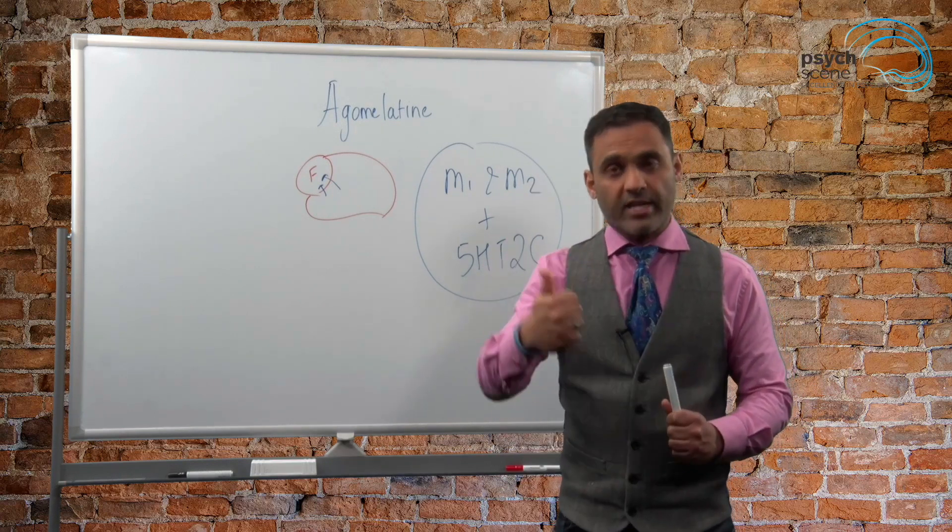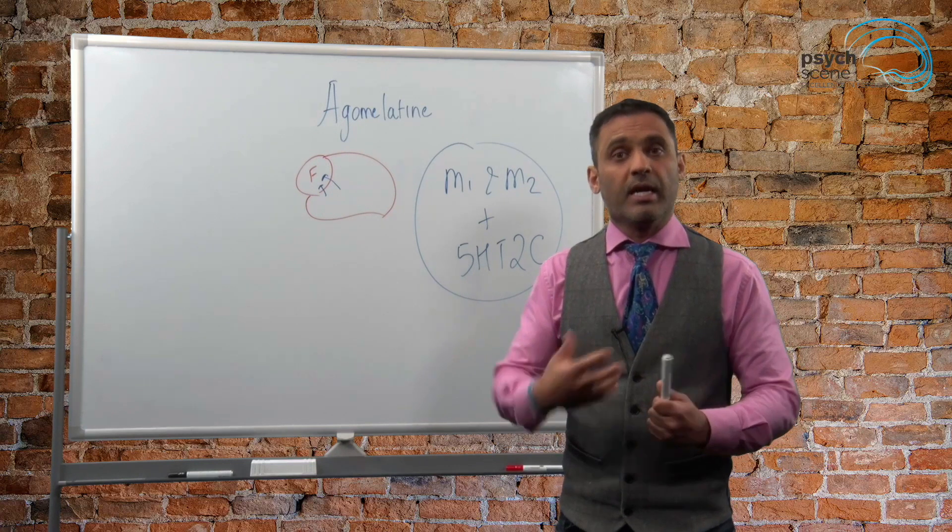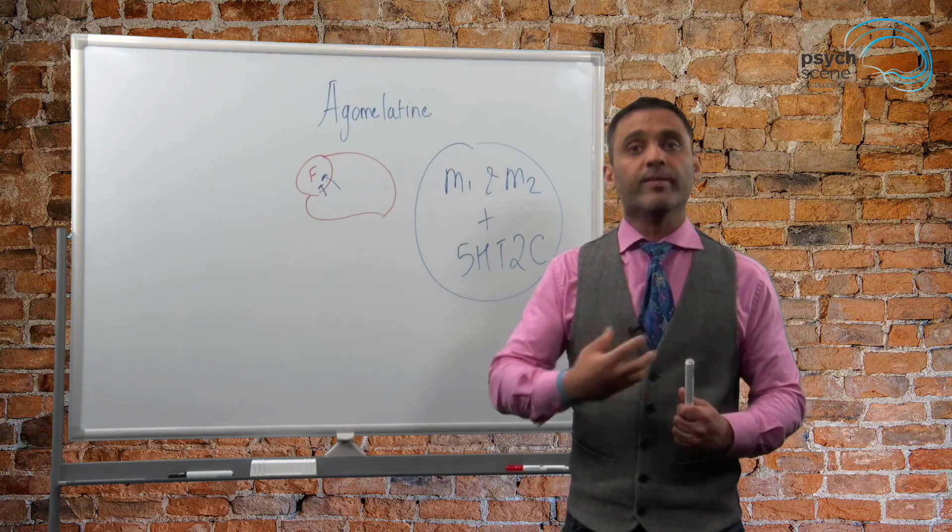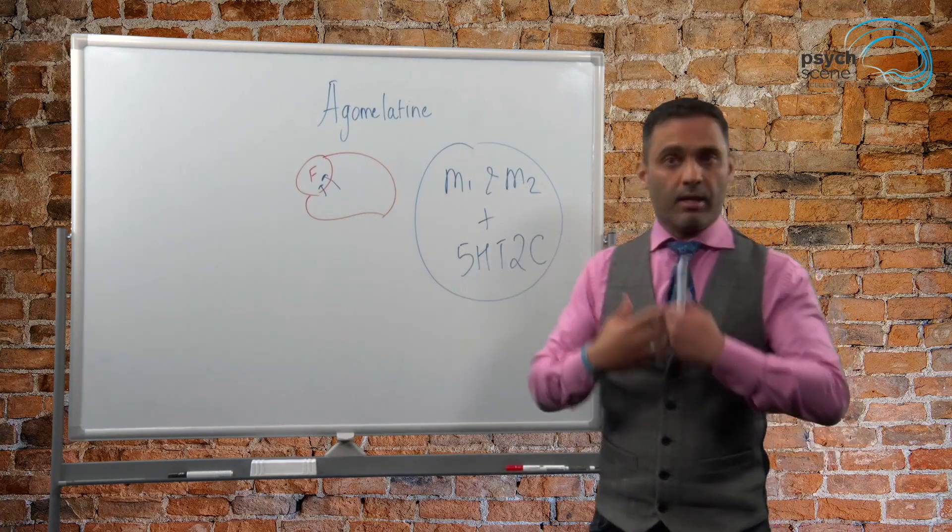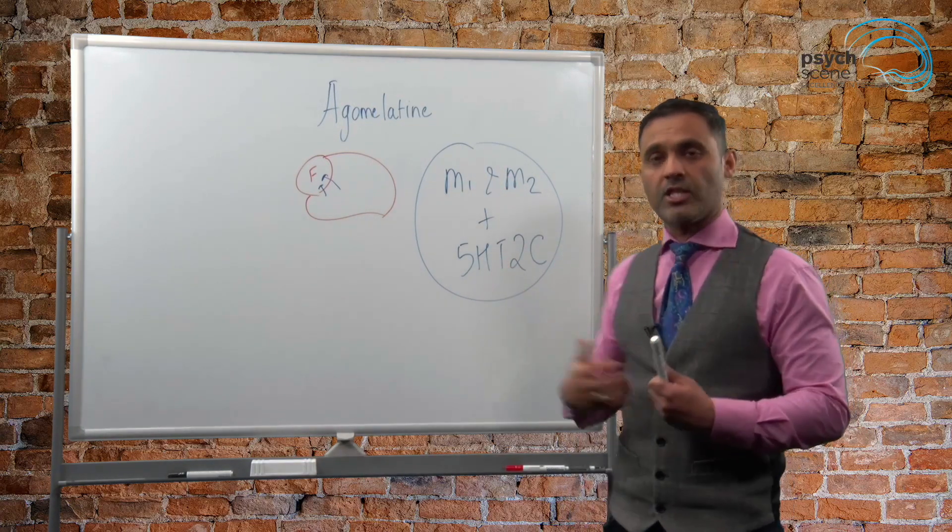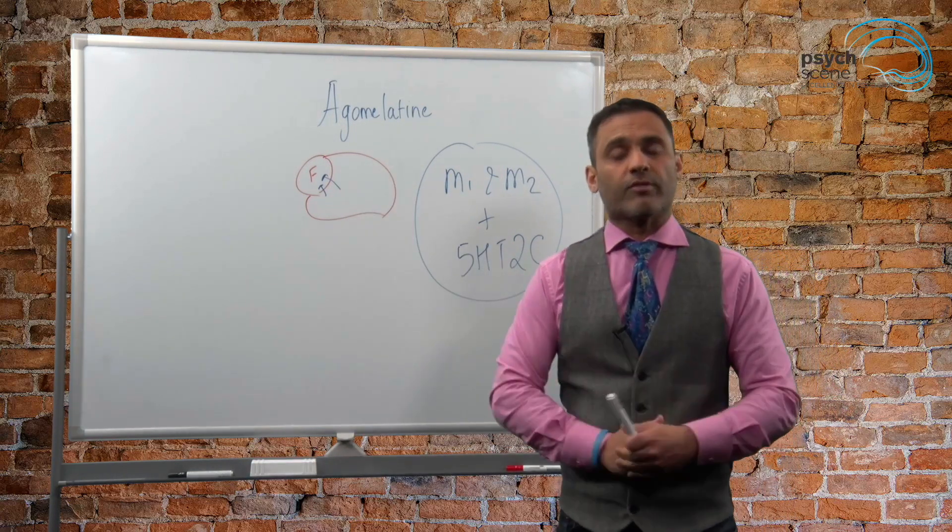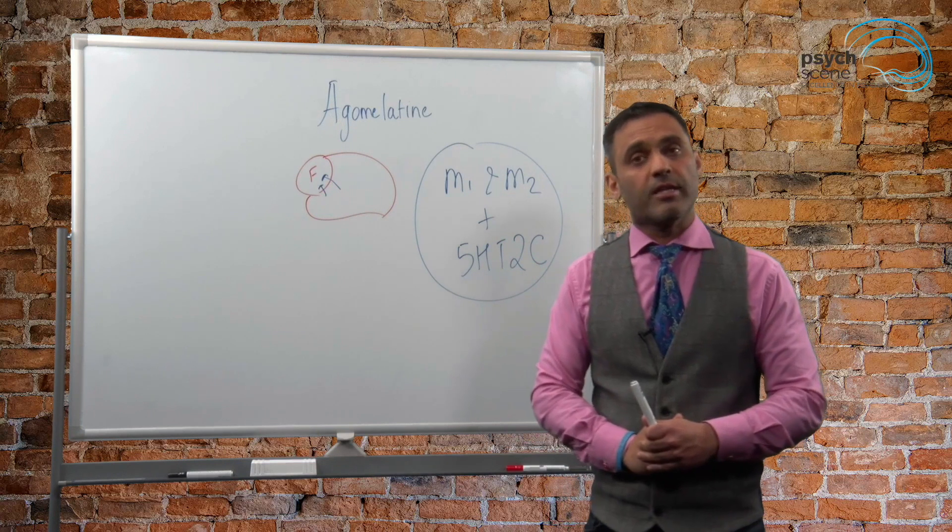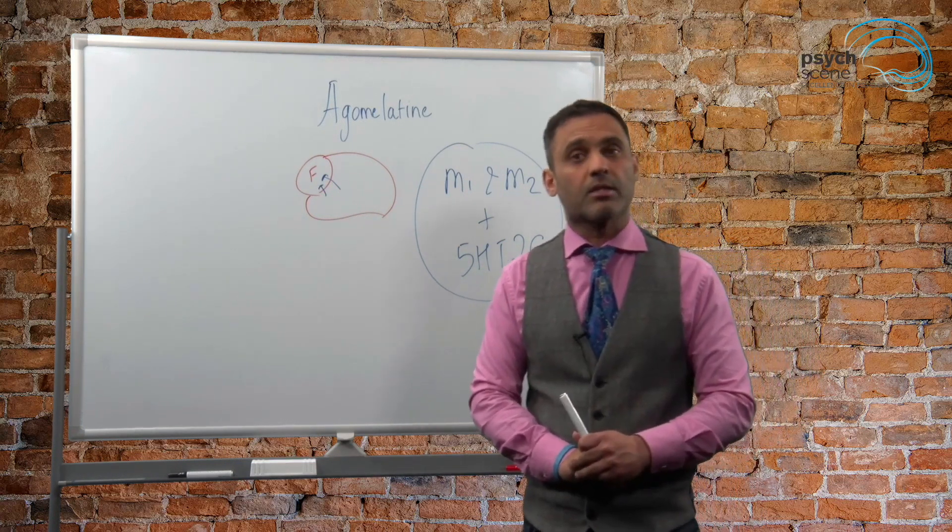focus, attention and concentration, decision making, and in general improvement in mood. So by M1, M2 agonism and 5-HT2C antagonistic activity, increased levels of noradrenaline and dopamine are present in the prefrontal cortex, which contributes to its antidepressant properties.